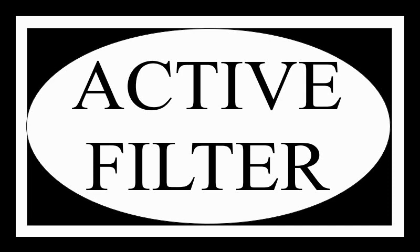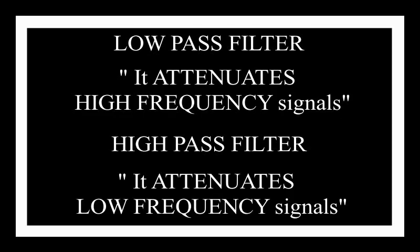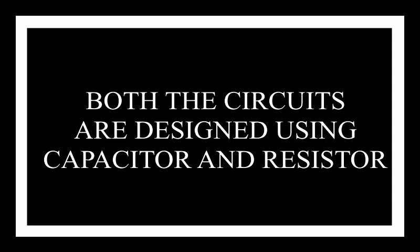In the RC passive filter tutorial, we saw a basic first order filter circuit such as the low pass and the high pass filter that can be used to attenuate unwanted frequencies in the signal by using just two components: resistor and capacitor.